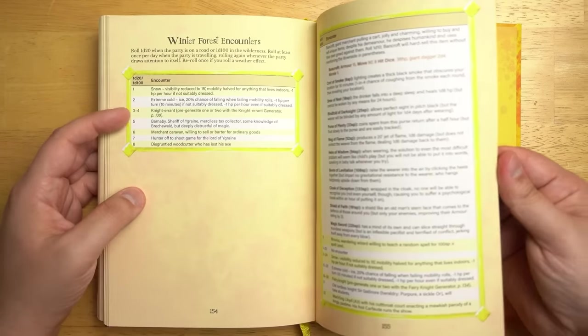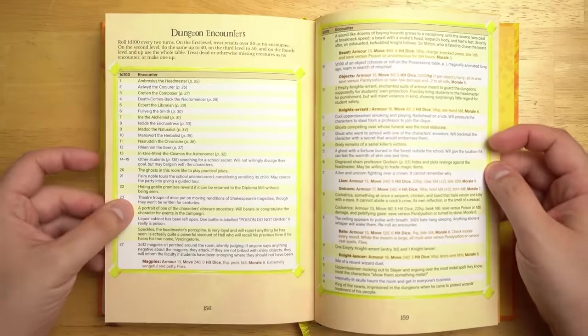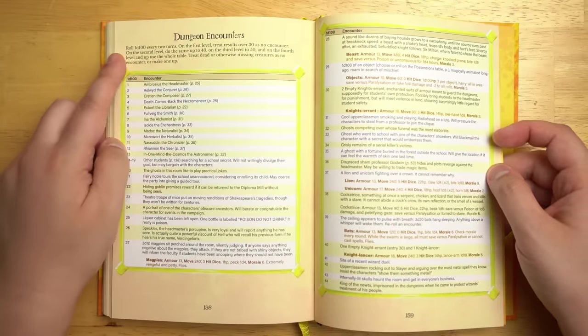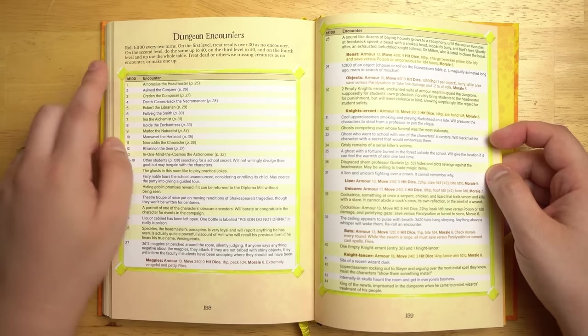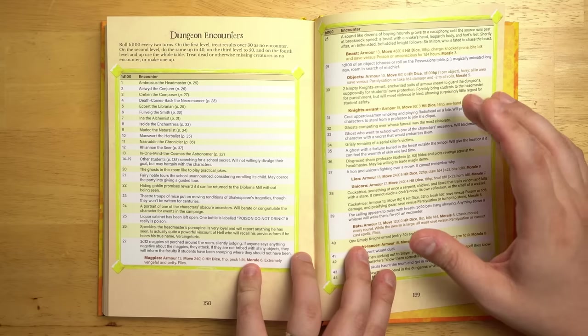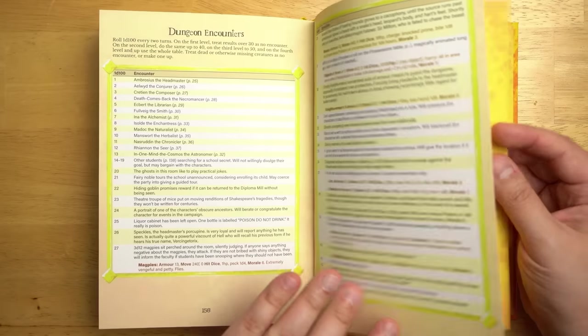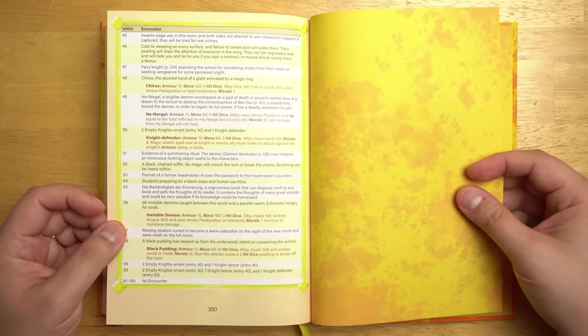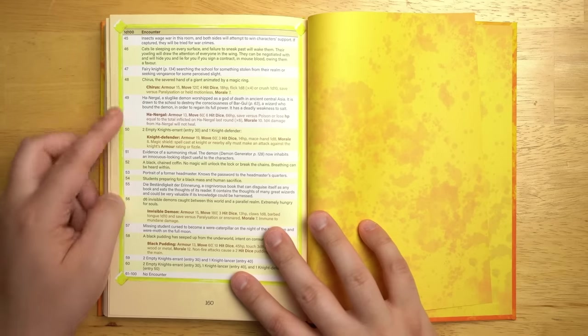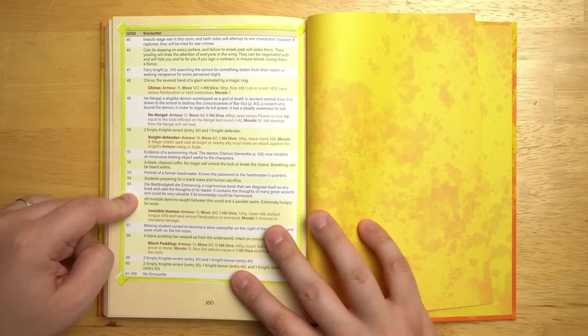One for autumn and you have one for winter. And then at the very back, we also are going to have one for the dungeon encounters. So for this, you roll a d100 every two turns. But on the first level, you treat results over 30 as no encounter. Second level, do the same up to 40 and et cetera, et cetera. So as you go deeper in, you're going to have access to much of the higher level or weirder encounters, which might be stuff like Ha-Nur-Gol, a slug-like demon worshipped as a god of death in ancient Central Asia, or maybe a carnivorous book that can disguise itself as any book and eats the thoughts of its reader.